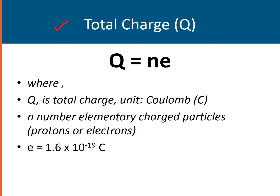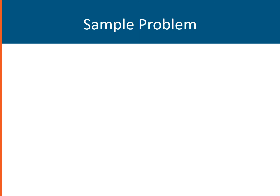Another quantity that you must be familiar with is the total charge, which is symbolized with the letter Q. Total charge is equal to Q = nE, where Q is the total charge and the unit for that is Coulomb. N is just the number of elementary charged particles — it could be protons or electrons — and remember that the value of E is 1.6 times 10 to the negative 19 Coulomb.